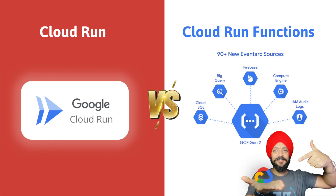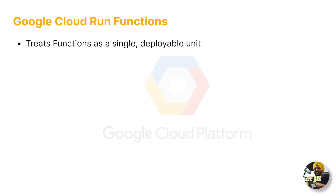Let's discuss Google Cloud Run Functions. Cloud Run treats a container image as the deployable unit, whereas in Cloud Run Functions, the deployable unit is a function. This is the key difference.